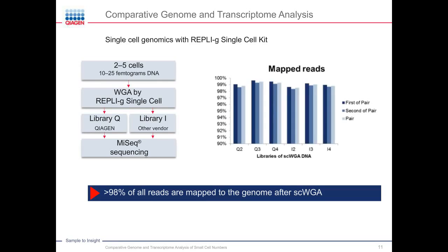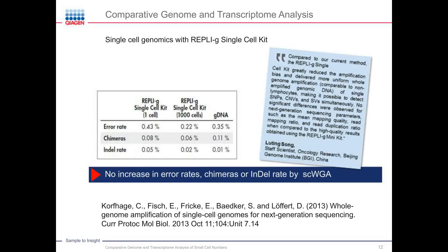Looking at error rates, despite the billion-fold amplification, the rate of errors, insertion-deletions, or chimeras is very, very low. The values are indistinguishable between NGS data obtained after RepliG amplification or with non-amplified DNA. So, the WGA DNA is highly suitable for NGS without introducing errors or insertions and deletions. A reference for a detailed protocol describing the whole process from the cell to WGA and up to NGS was published in 2013 in Current Protocols of Molecular Biology.